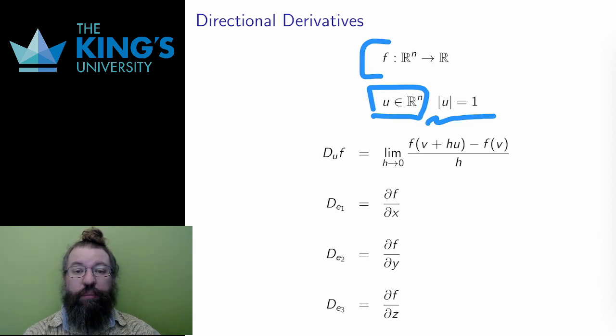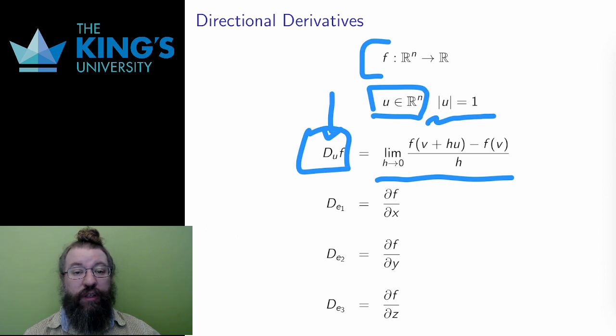The derivative is given by a limit definition, as are all derivatives. It is written Dᵤ(f), the derivative of the scalar field f in the direction u. At some point v in Rⁿ, it is the limit of [f(v + hu) - f(v)]/h as h goes to 0.